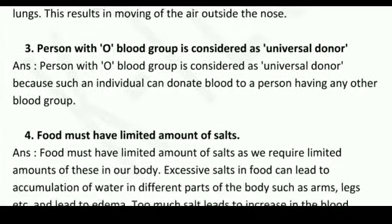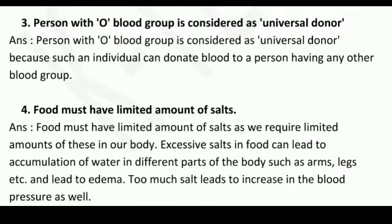Question number three: A person with blood group O is considered a universal donor. Answer: A person with blood group O is considered a universal donor because such an individual can donate blood to a person having any other blood group.